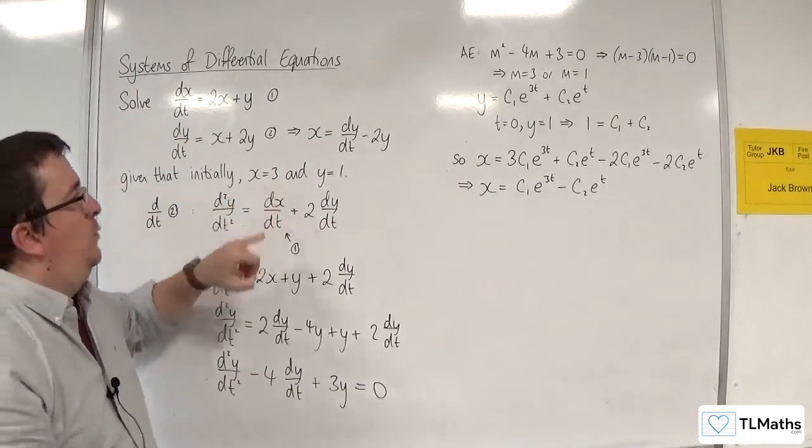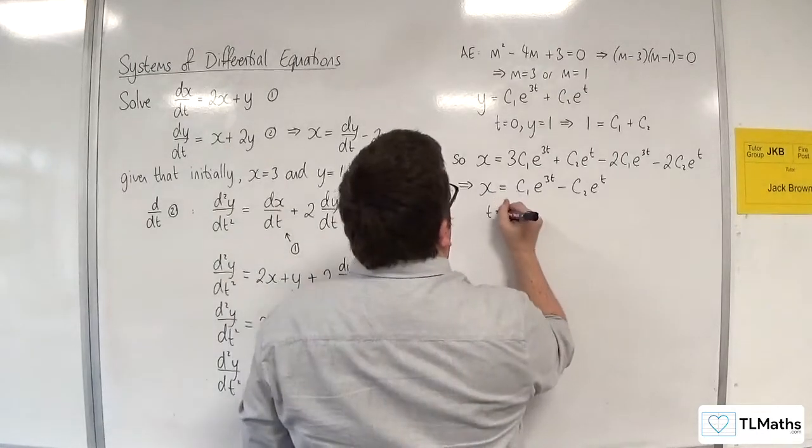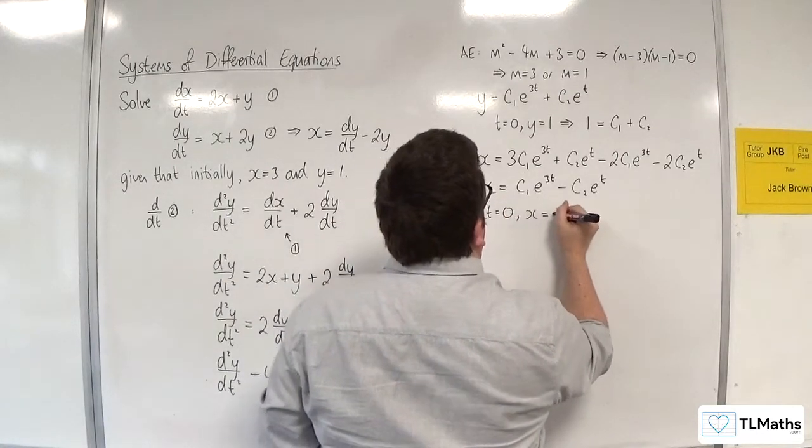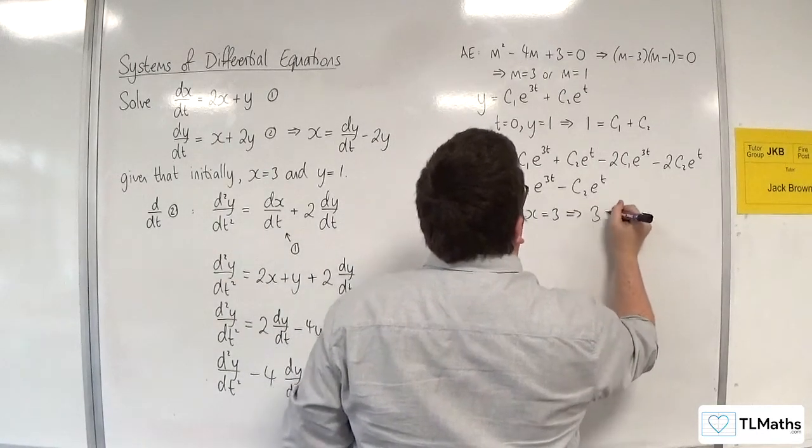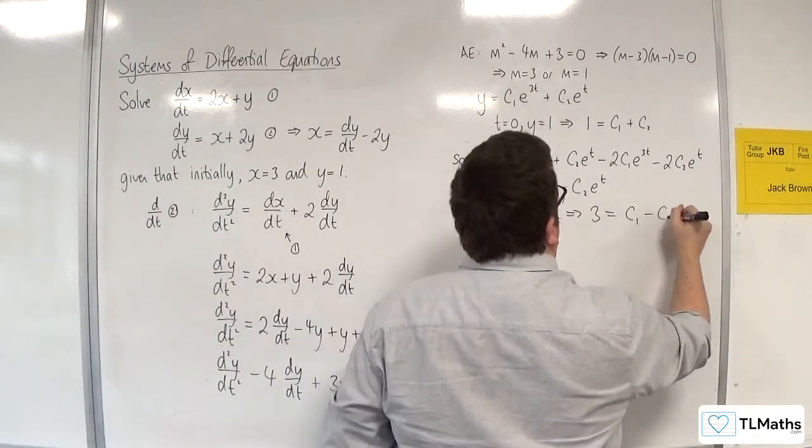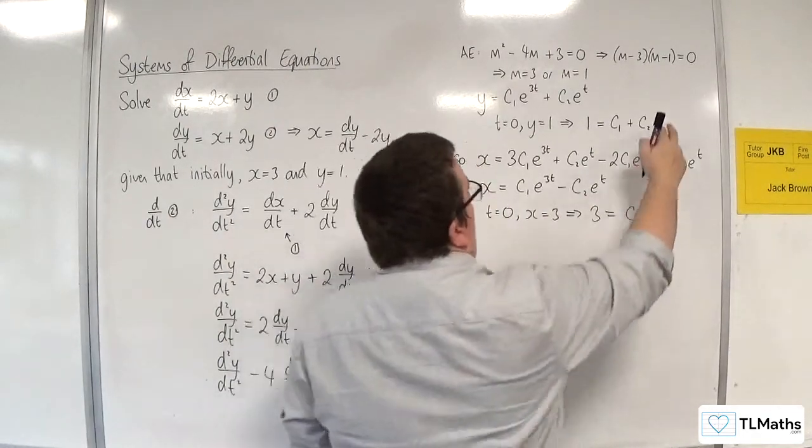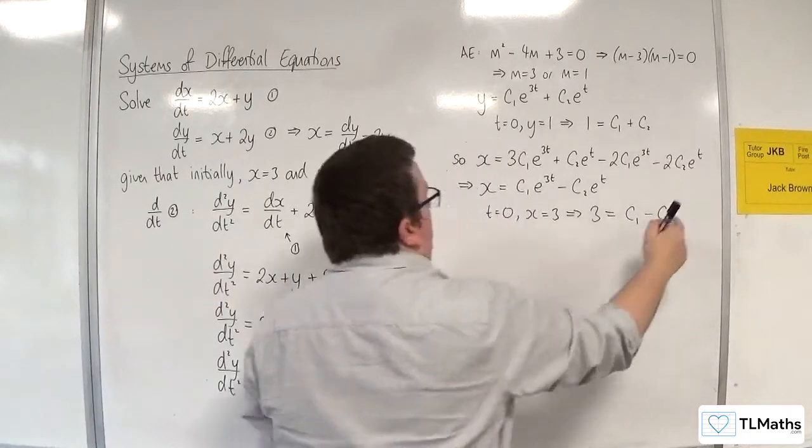And initially x is equal to 3, so t equals 0, x equals 3. So 3 is equal to c1 take away c2. And now we have these two simultaneous equations.